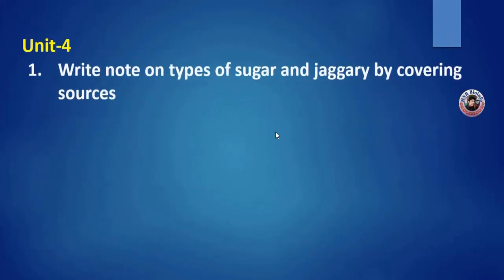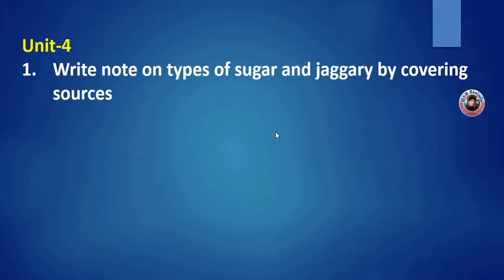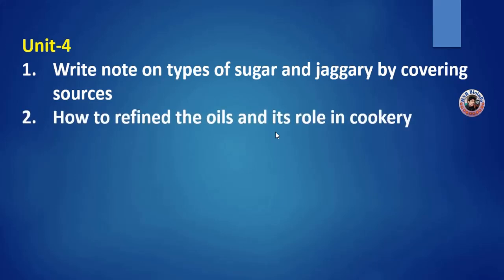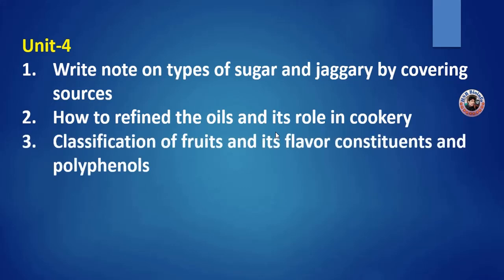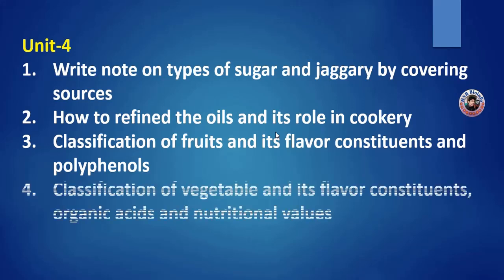Unit 4. First important question: write a note on the types of sugar and jaggery, covering their sources. Second question: how to refine oils and their role in cookery. Third: classification of fruits, their flavor constituents and polyphenols. Fourth important question: classification of vegetables, their flavor constituents, organic acids, and nutritional values.